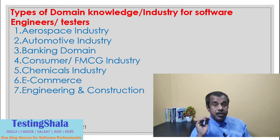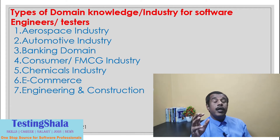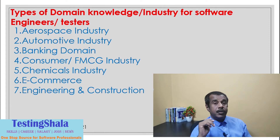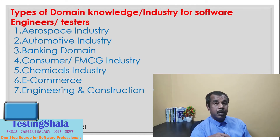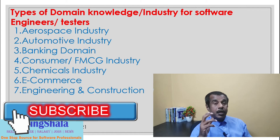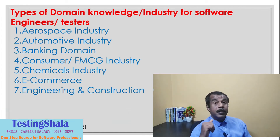The seventh is engineering and construction. Many large real estate developers require a lot of software — it could be ERP systems or custom customer-facing software to manage clients and generate more business. They also require engineering applications, engineering devices, and engineering mobile apps.